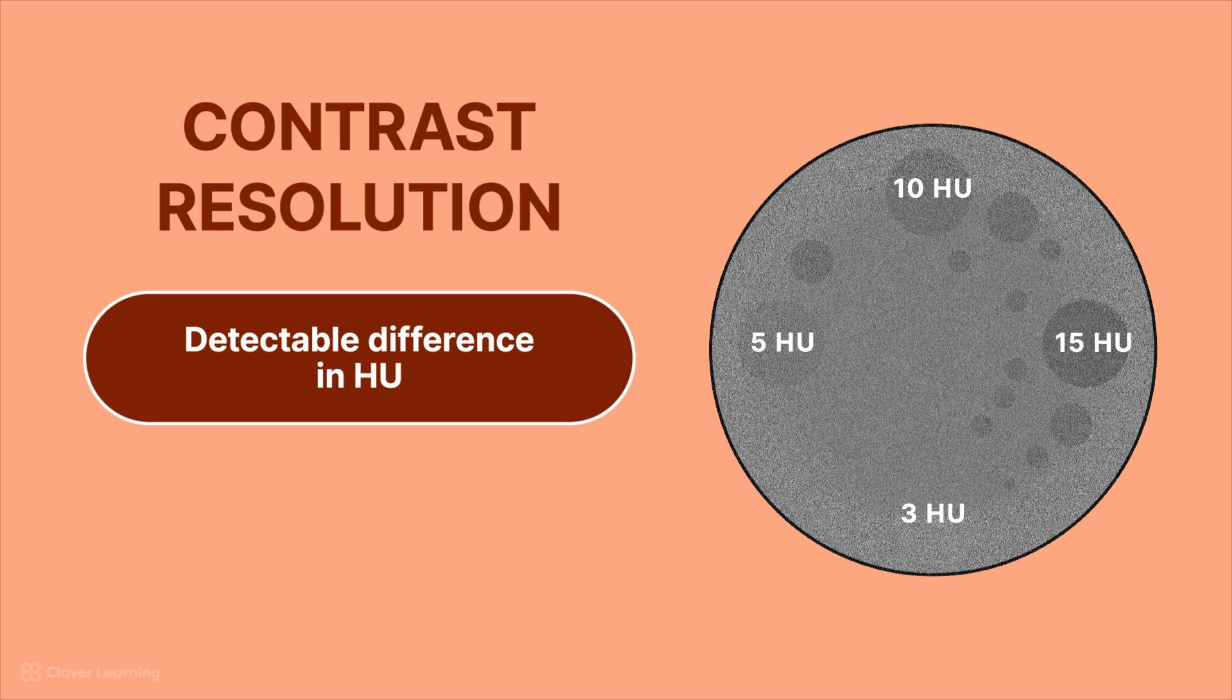We can definitely see the difference between the 15 Hounsfield unit spheres in the background. We can clearly see the 10 Hounsfield unit spheres. We can just barely see the five Hounsfield unit spheres, and we can't see the three Hounsfield unit spheres. And so in this particular image on this particular scanner, we would say that the contrast resolution is five Hounsfield units.